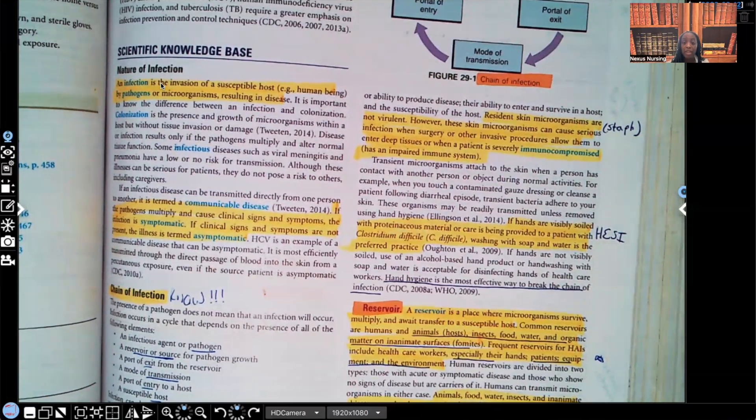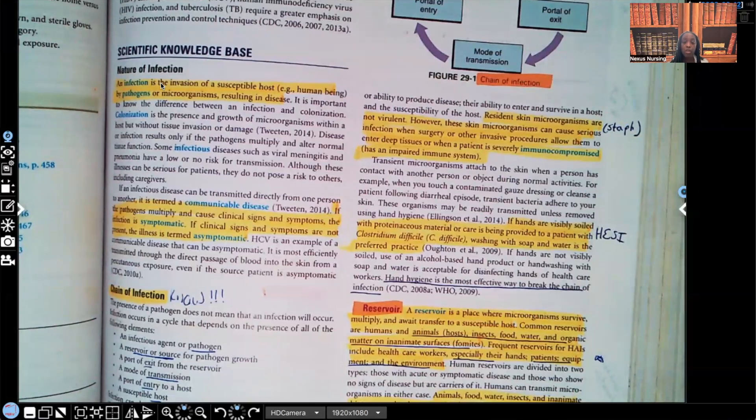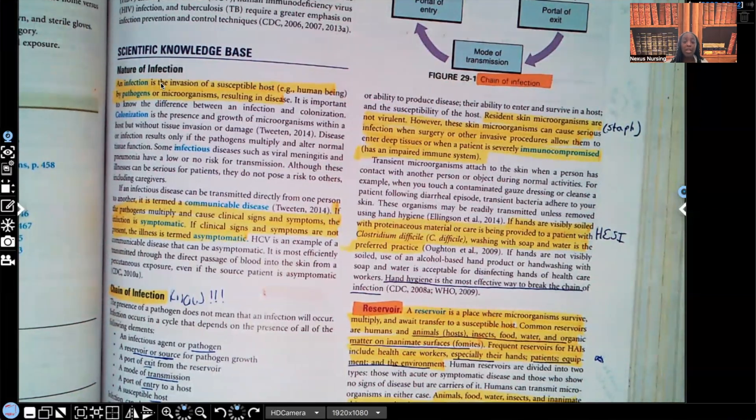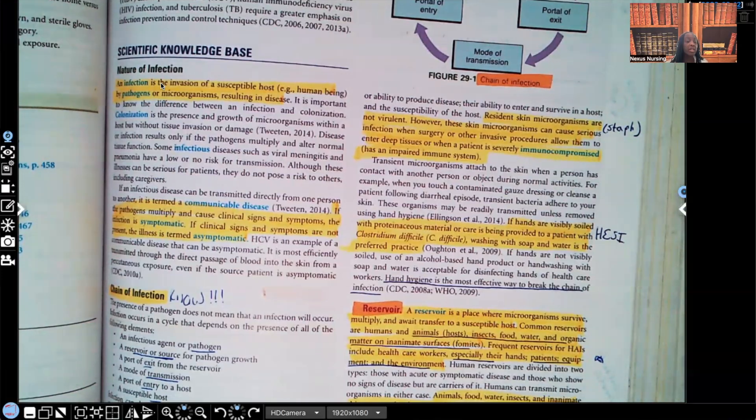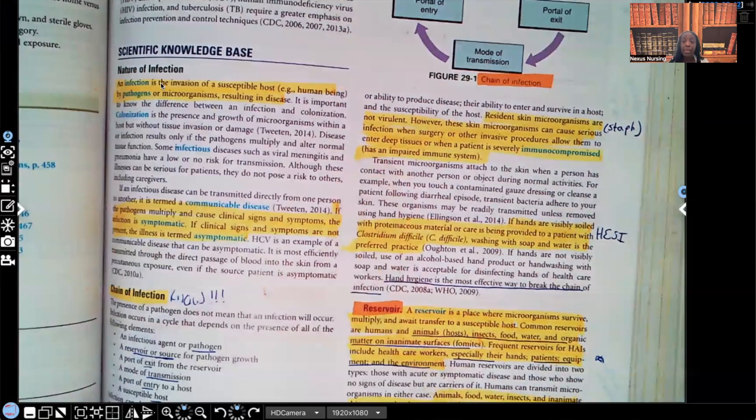In three different ways, they're talking about the same thing. Why? That's how important it is for you to know. You're going to see this on the test. Don't say I didn't warn you. Anyway, so let's keep talking. Let's keep going. We're talking about infectious agents. We're right here. It says resident skin microorganisms are not virulent. However, these skin microorganisms can cause serious infection when surgery or other invasive procedures allow them to enter deep tissue or when a patient is severely immunocompromised, which means they have an impaired immune system. If you look on the side, I wrote staff and I'm going to give you, that's a perfect example. If you get a test question on this, usually staff is the one that they use.